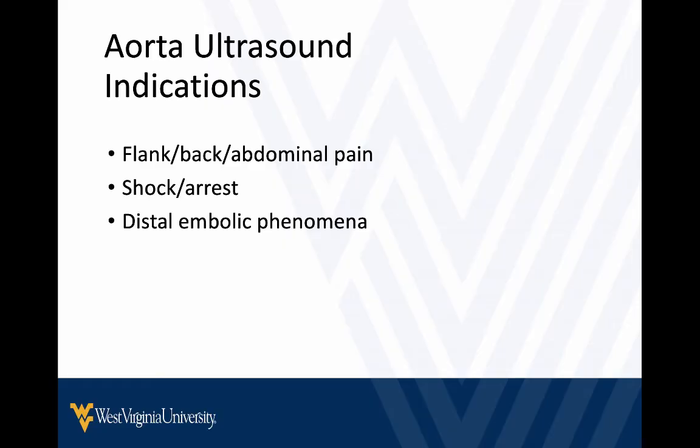Reasons you might take a look at the aorta, at least in the acute or hospital setting, is patients with symptoms — flank pain, back pain, maybe abdominal pain, or if they're in shock or cardiac arrest and you think ruptured AAA may be part of the etiology. Maybe they also present with distal embolic phenomenon, like leg ischemia or something like that.